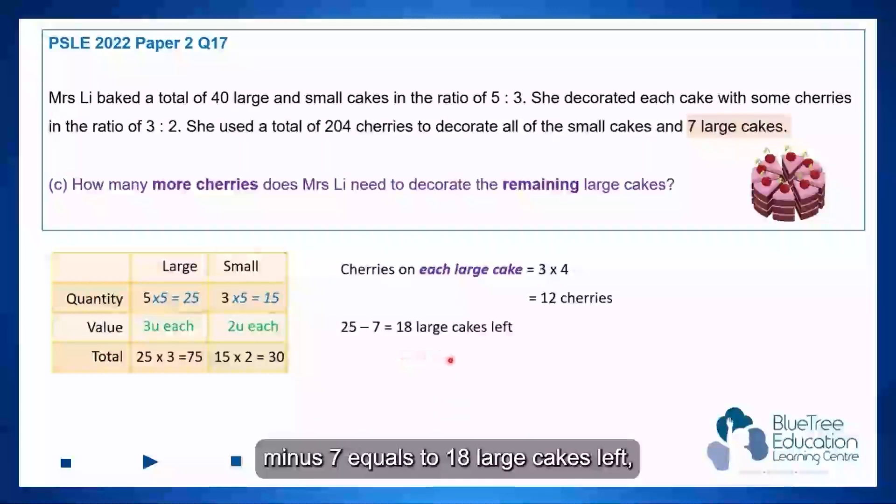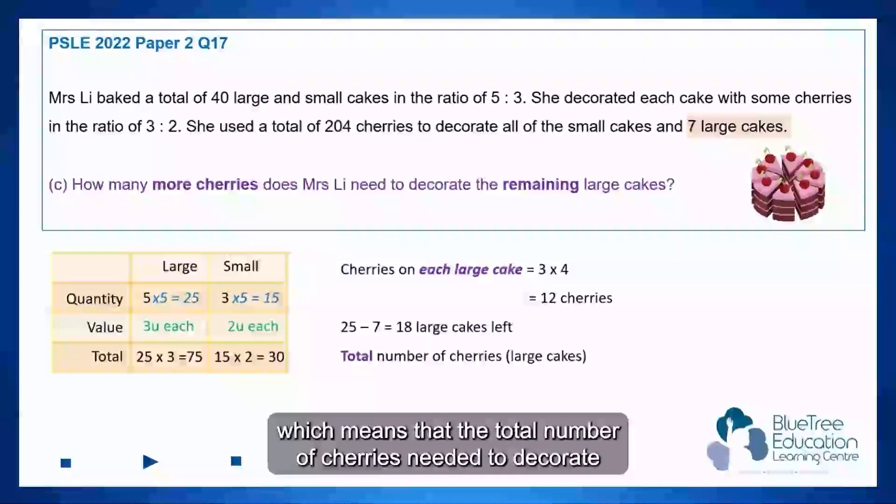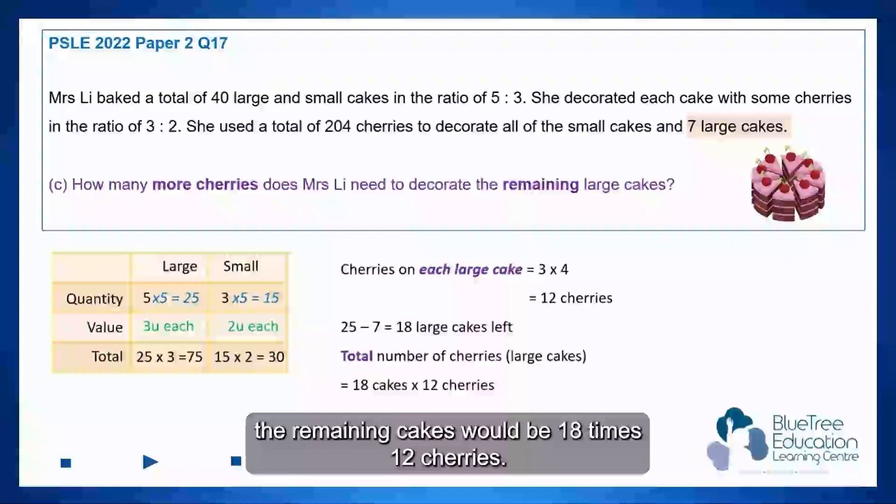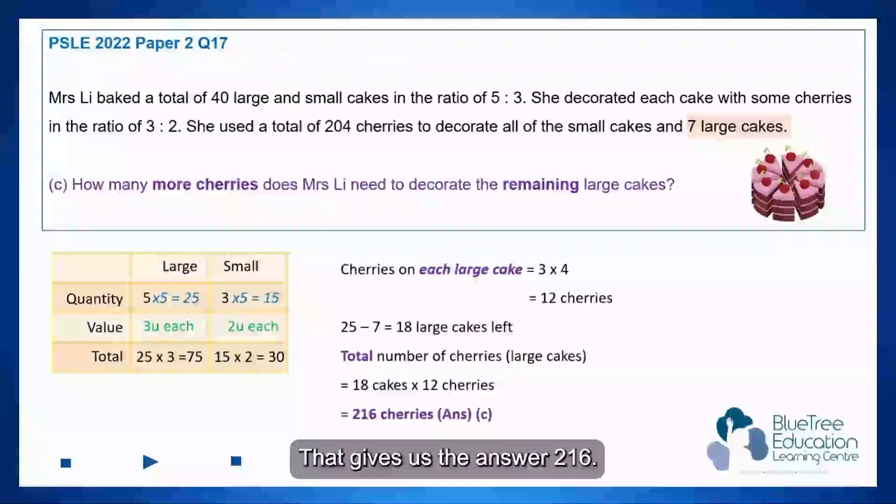So back to the solution again, 25 minus 7 equals to 18 large cakes left, which means that the total number of cherries needed to decorate the remaining cakes would be 18 times 12 cherries. That gives us the answer 216.